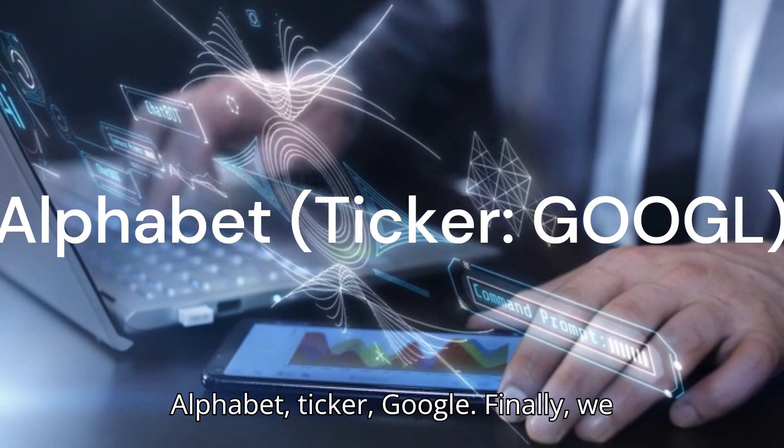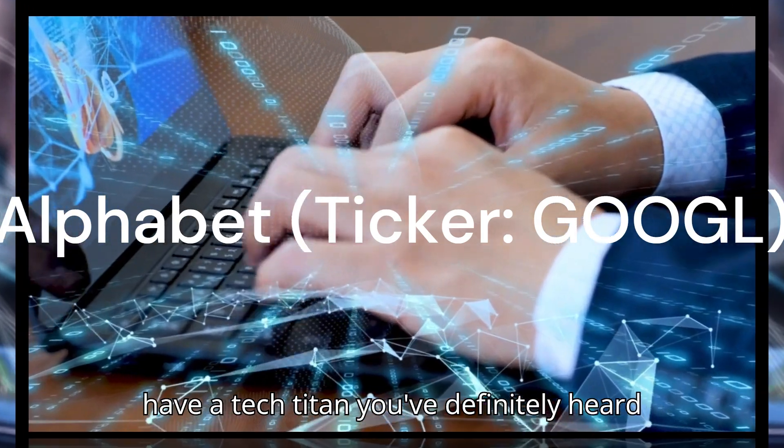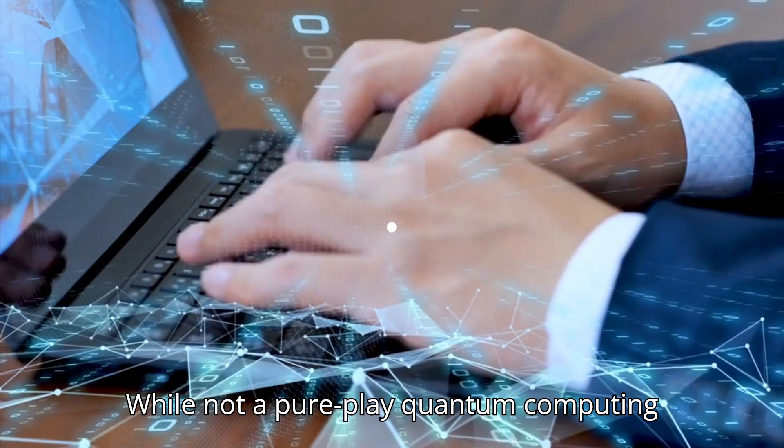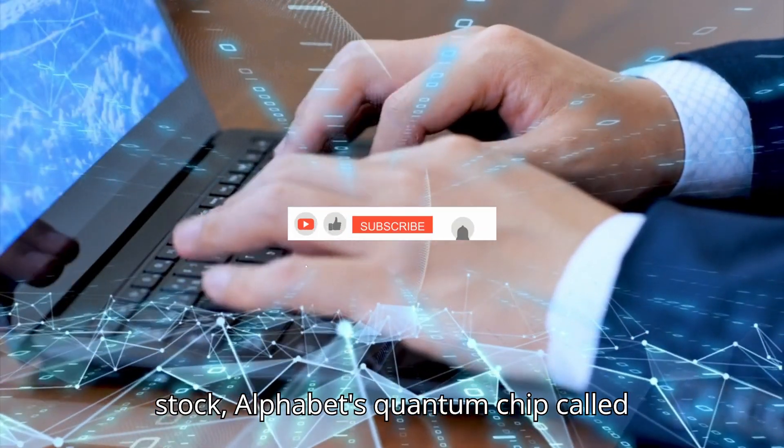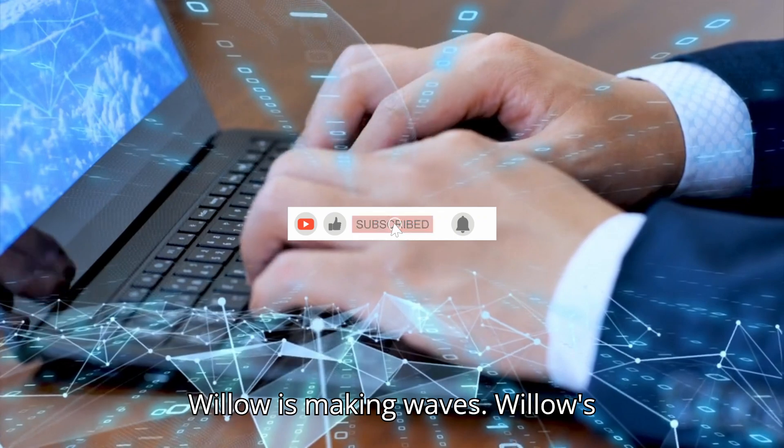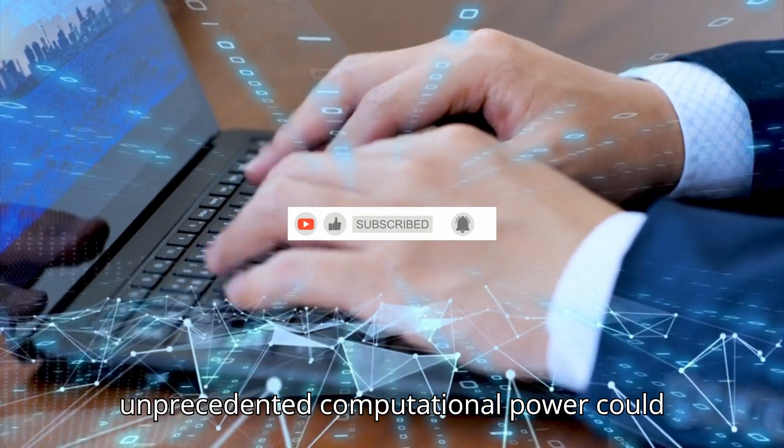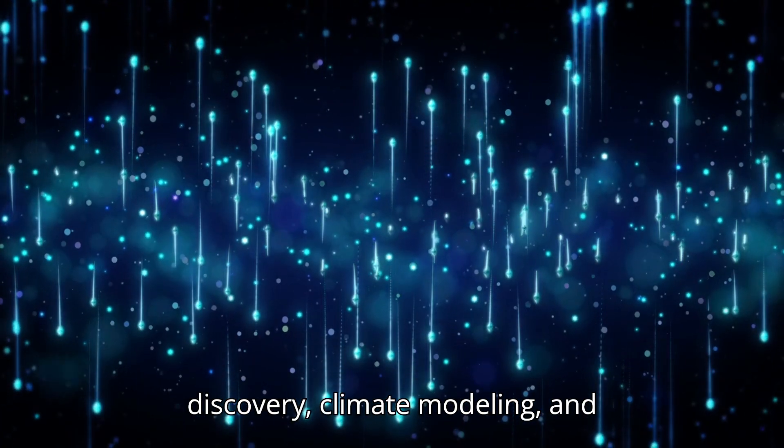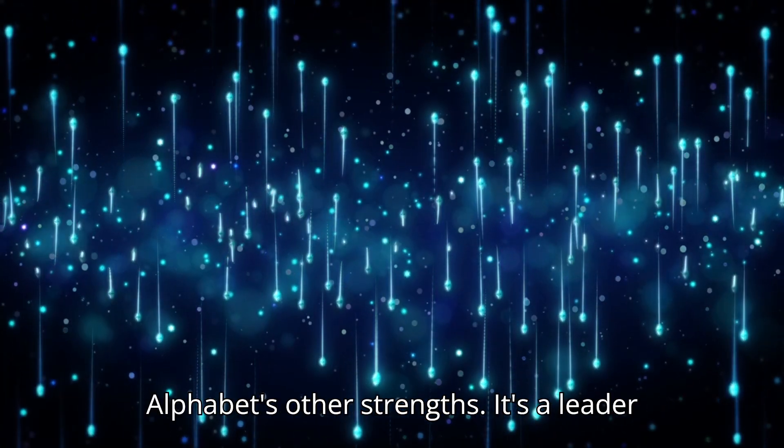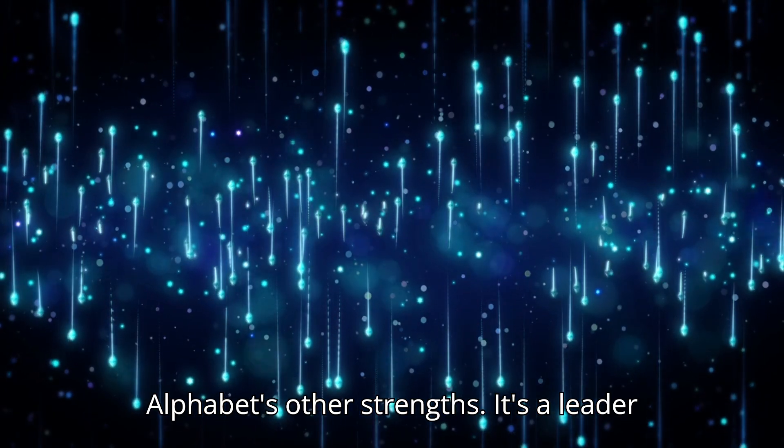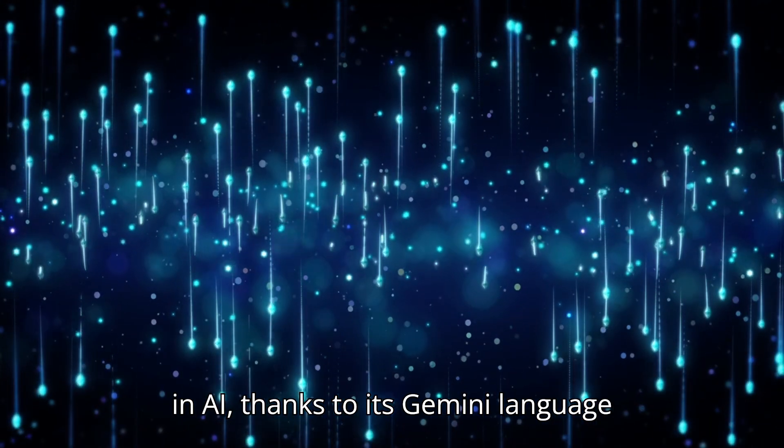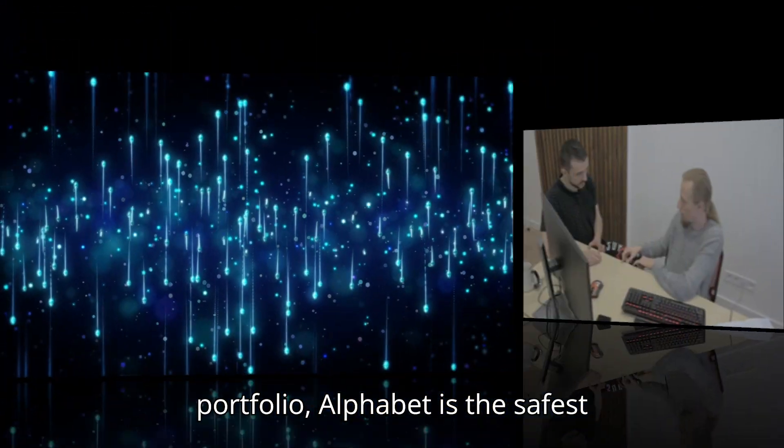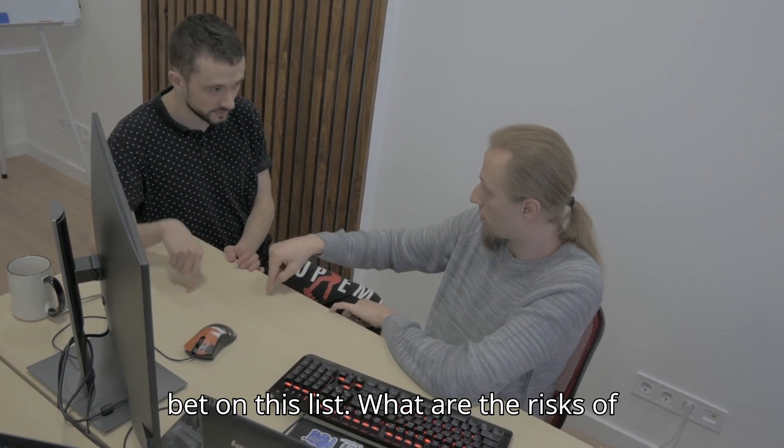Stock number 5: Alphabet, ticker Google. Finally, we have a tech titan you've definitely heard of: Alphabet, Google's parent company. While not a pure-play quantum computing stock, Alphabet's quantum chip called Willow is making waves. Willow's unprecedented computational power could lead to breakthroughs in fields like drug discovery, climate modeling, and encryption. And let's not forget Alphabet's other strengths. It's a leader in AI, thanks to its Gemini language model, and dominates search and entertainment. With its diversified portfolio, Alphabet is the safest bet on this list.